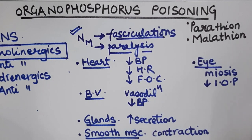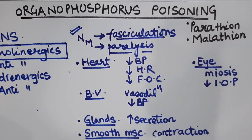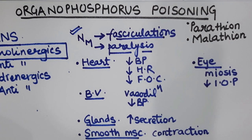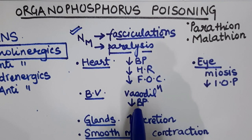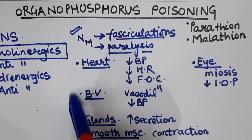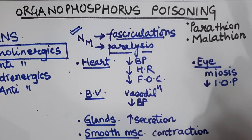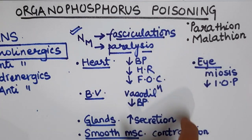Organophosphorus compounds include parathion and malathion — they can be pesticides, herbicides, and insecticides. These are easily available and used for agricultural and household purposes, making their poisoning very common. These organophosphates are cholinergic drugs, so in organophosphorus poisoning all cholinergic effects are produced in excess — beyond normal levels.